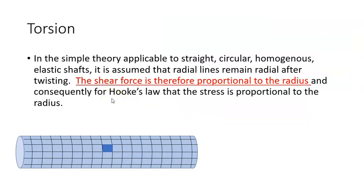Now, when we're looking at torsion, we make the assumption that the radial lines here remain radial. And therefore, the shear force is proportional to the radius. And consequently, for Hooke's Law, that the stress is proportional to the radius.